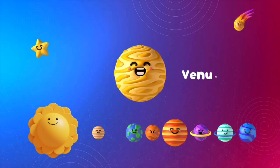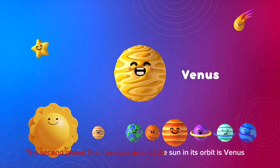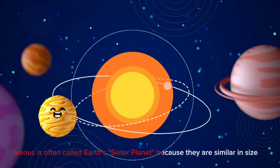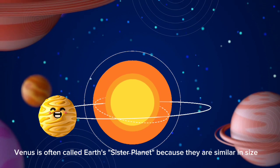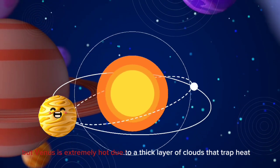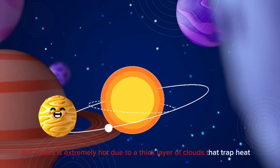The second planet that revolves around the sun in its orbit is Venus. Venus is often called Earth's sister planet because they are similar in size. But Venus is extremely hot due to a thick layer of clouds that trap heat.